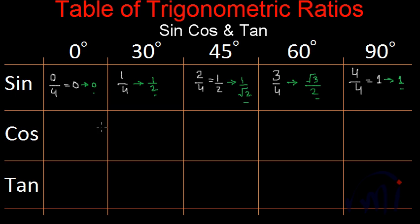And how to find the values of cos? You just write down all these values in reverse order. That means cos 0 will be equal to sine 90 which is 1. Cos 30 will be equal to sine 60 which is root 3 by 2. Cos 45 will be equal to sine 45 that is 1 by root 2. Cos 60 will be equal to sine 30 that is 1 by 2. Cos 90 will be equal to sine 0 that is 0.